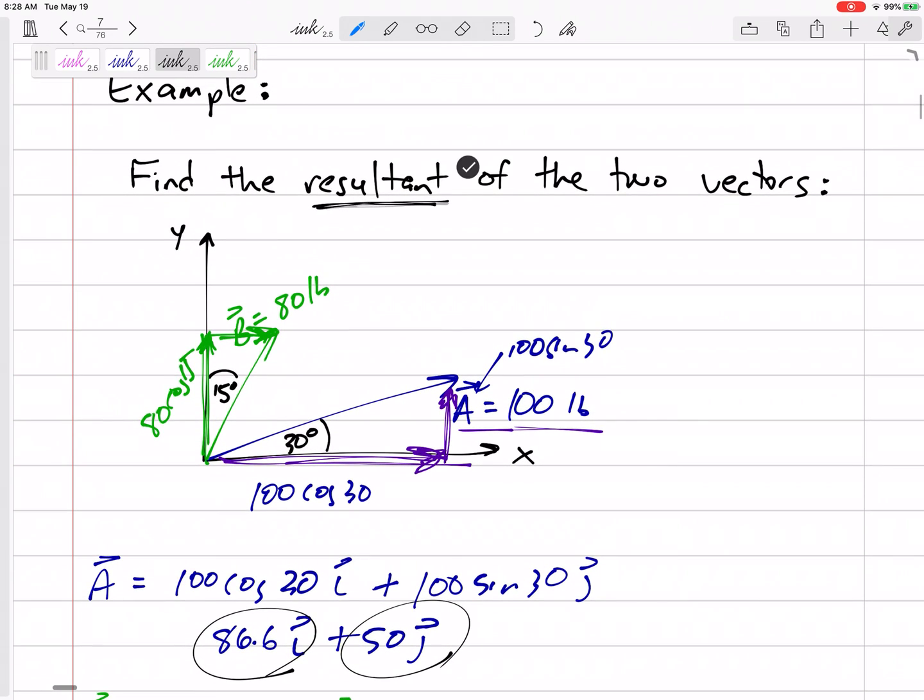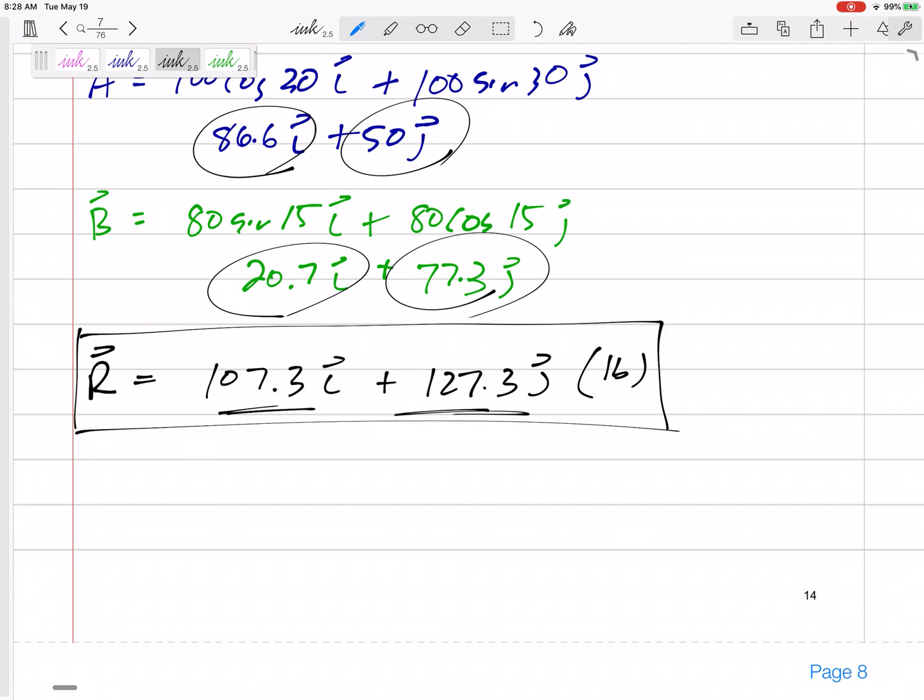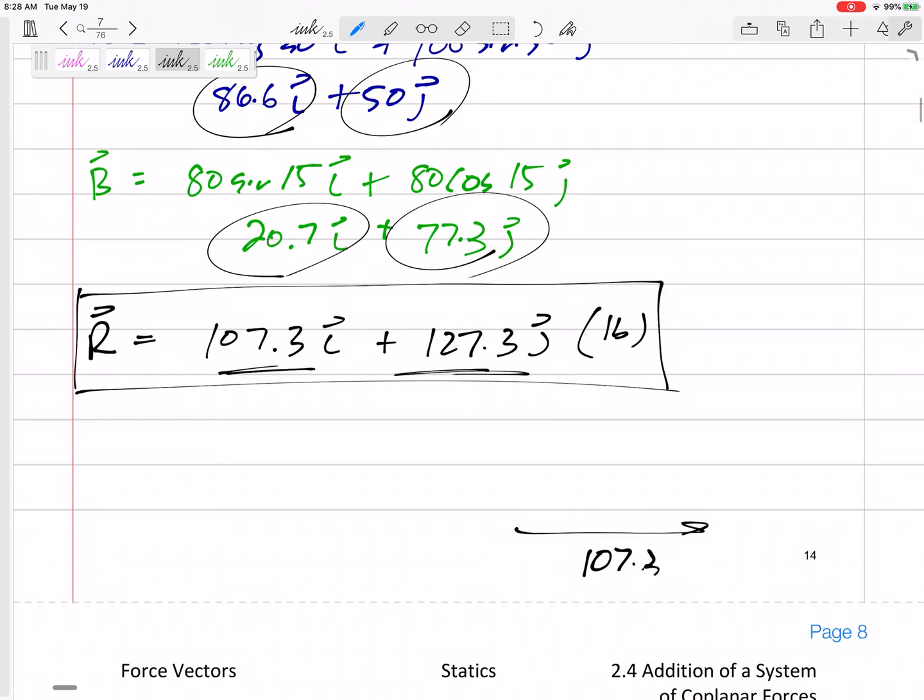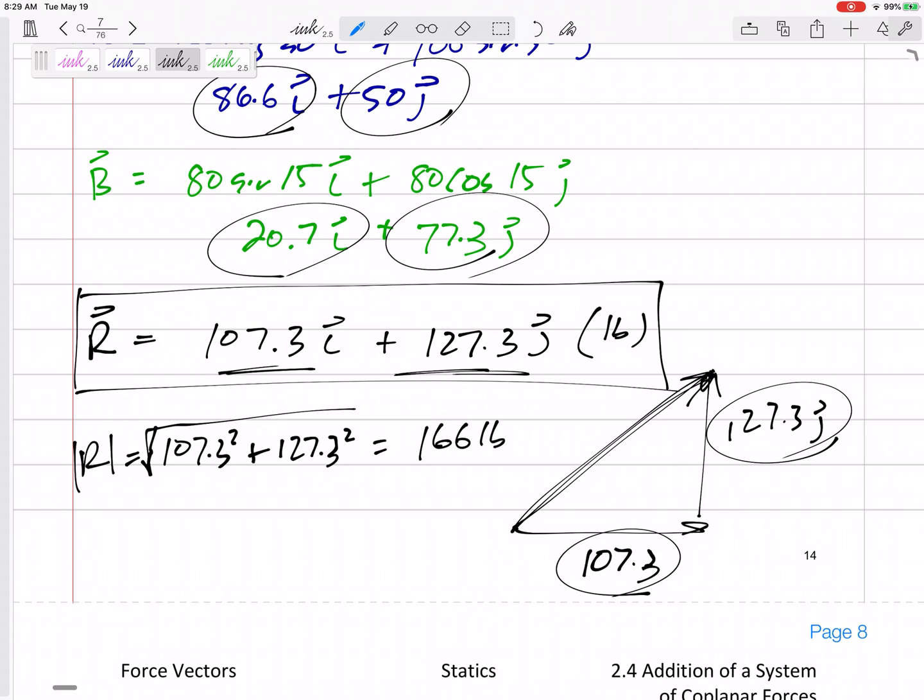But we could specify the resultant as the magnitude of this vector right here. It is 107.3 in the i, 127.3 in the j. What is the magnitude of that? Well, a squared plus b squared, take the square root. The magnitude would be 107.3 squared plus 127.3 squared, take the square root. The magnitude would be 166 pounds.